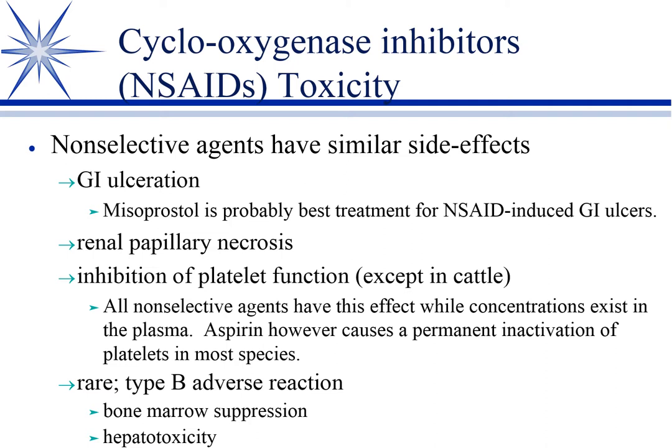Platelets are kind of interesting. All non-selectives — and there are two subsets of cyclooxygenase, COX-1 and COX-2; non-selective means they inhibit both — affect platelets to some degree by inhibiting thromboxane. Thromboxane is one of the prostaglandins produced by cyclooxygenase, and it's pro-coagulatory: it causes platelet aggregation. So all of these have some inhibition of platelet function.